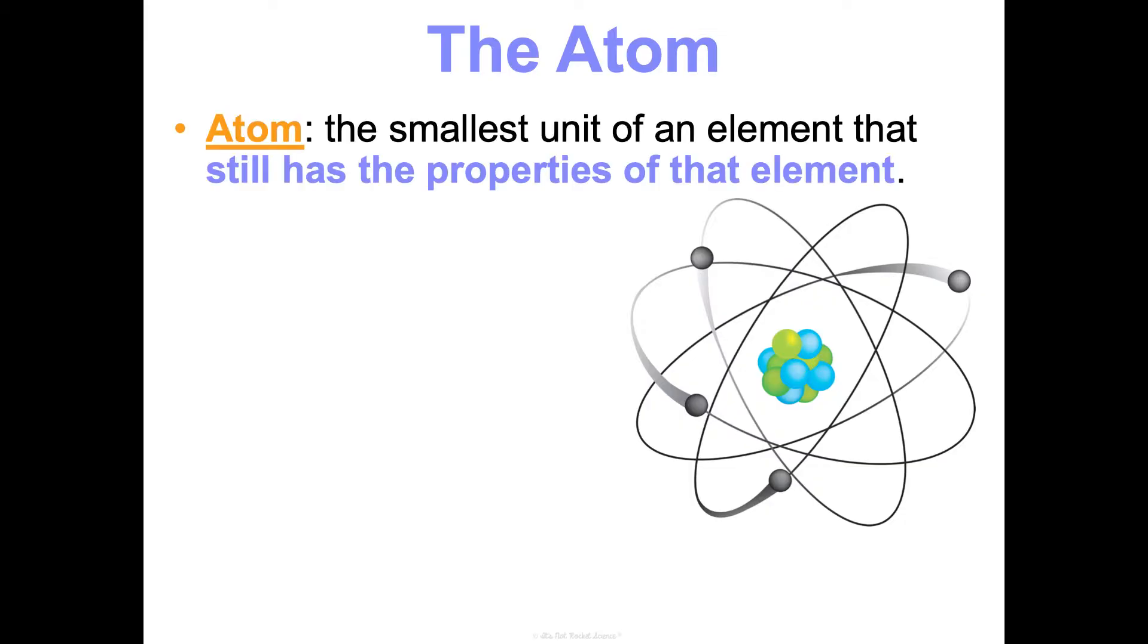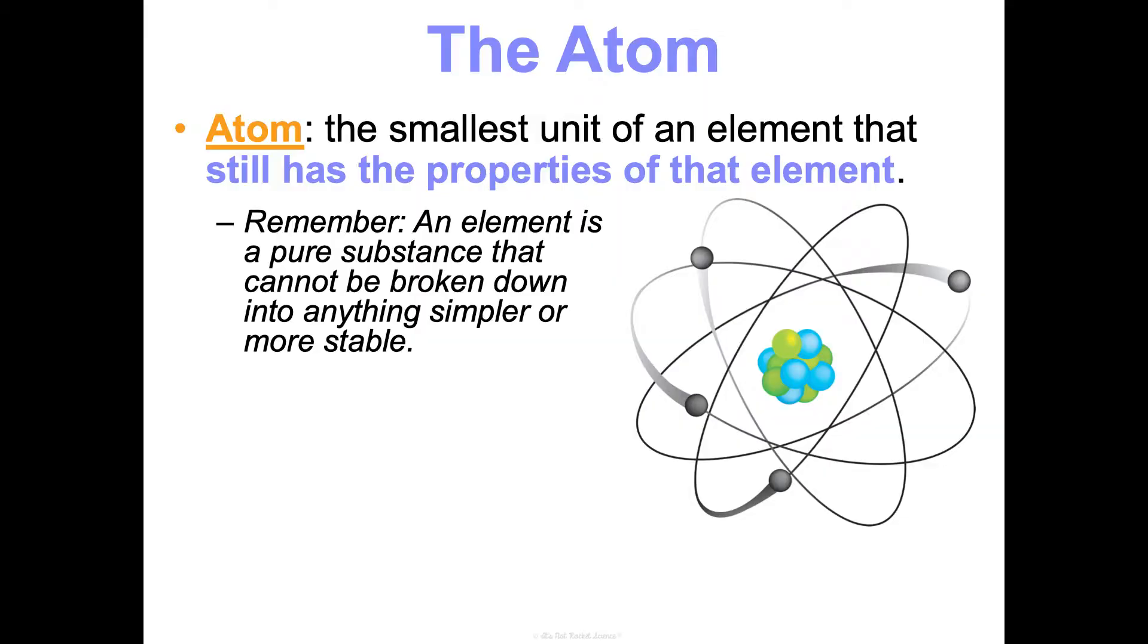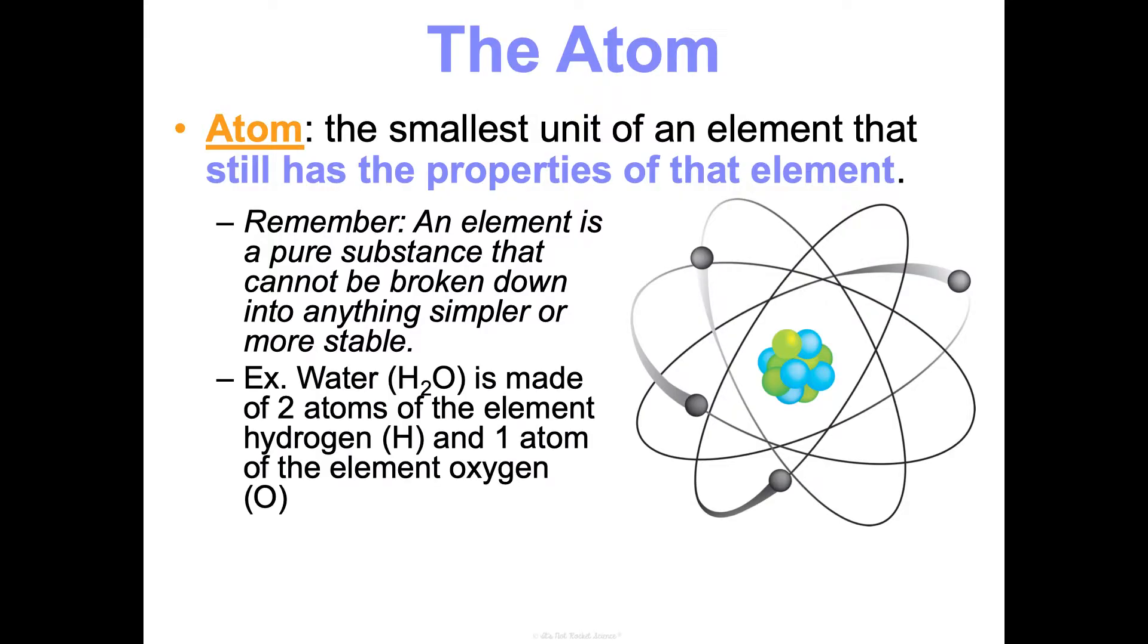An atom is the smallest unit of an element that still has the properties of that element. If you remember from our first unit, an element is a pure substance that cannot be broken down into anything simpler or more stable. The best way for me to remember the difference between an element and an atom and a compound is to look at it in an example. For example, water is H2O. That is a compound, a chemical compound. It is made when two atoms of the element hydrogen and one atom of the element oxygen are chemically combined to each other.